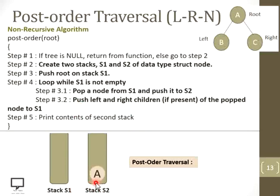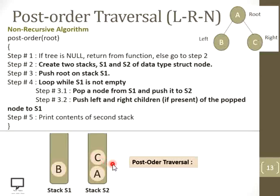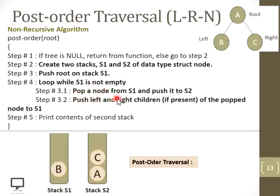The left child of A is B, which we push first, and then the right child C onto S1. Check again whether S1 is empty — it is not, so pop the top: C is popped from S1 and pushed onto S2. Check whether C has left and right children — it does not, so no push operation onto S1. Check again: S1 is not empty.